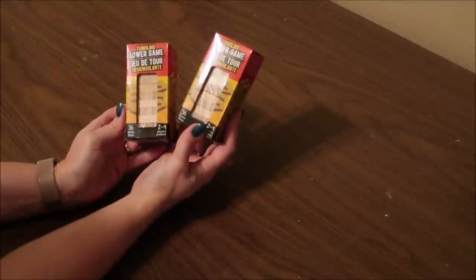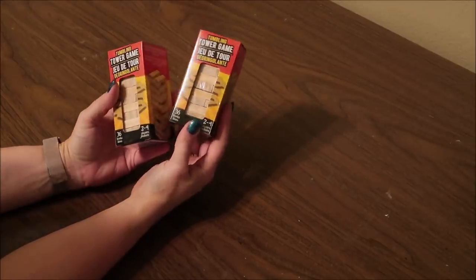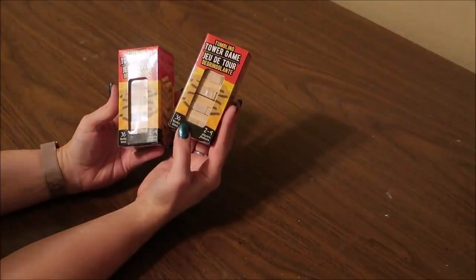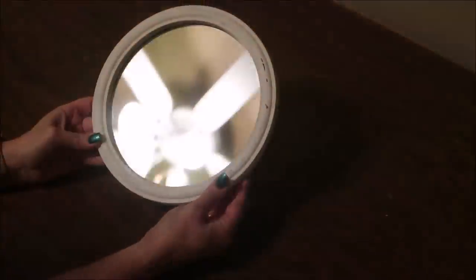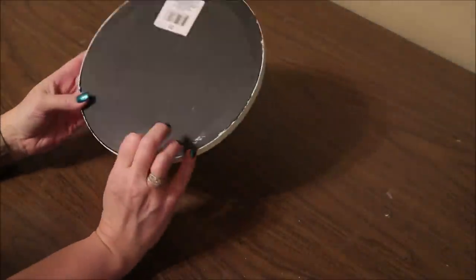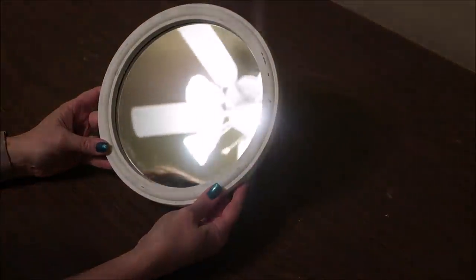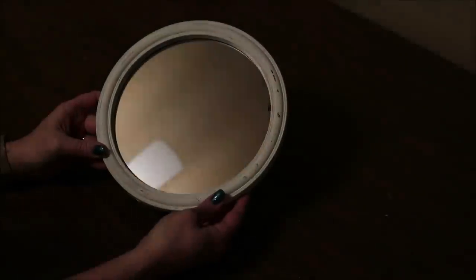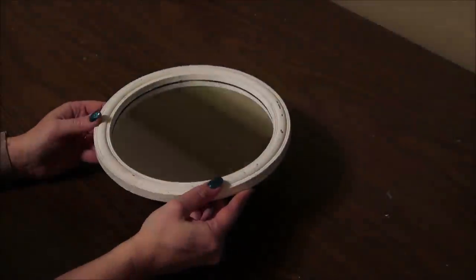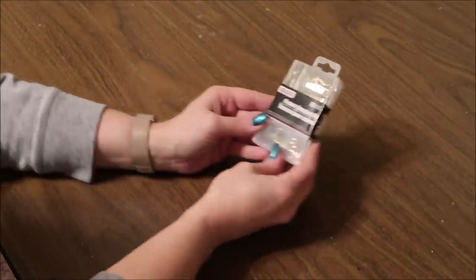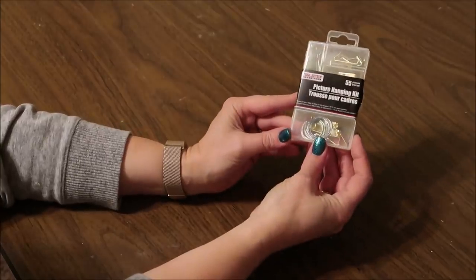To make the 20 by 20 size, I'm going to be using eight boxes of these Tumbling Tower games from Dollar Tree. I will also be using this mirror from Dollar Tree. When I purchased it, it was a black frame, but I had painted it for another project and ended up not using it. This mirror is probably about 10 inches in diameter. I also picked up this picture hanging kit from Dollar Tree.